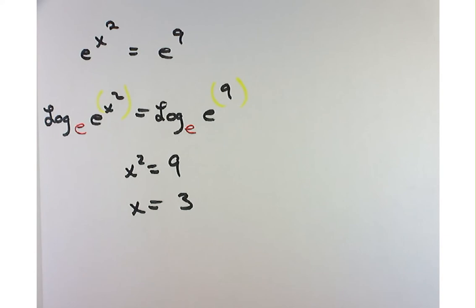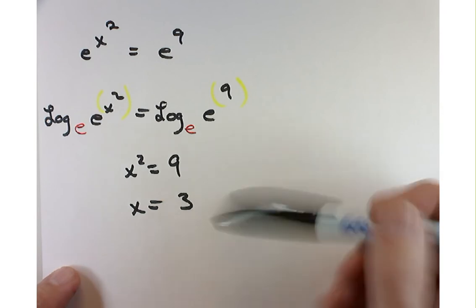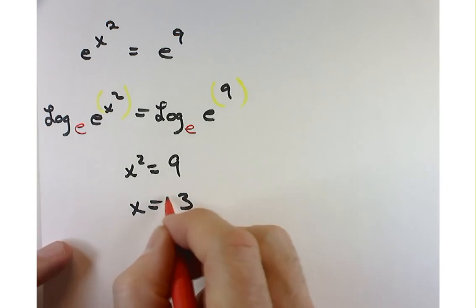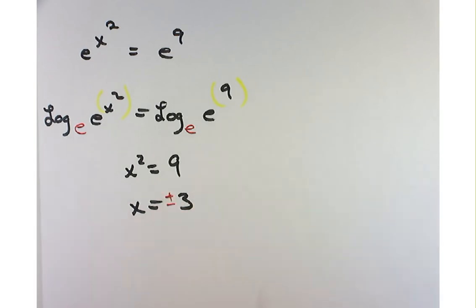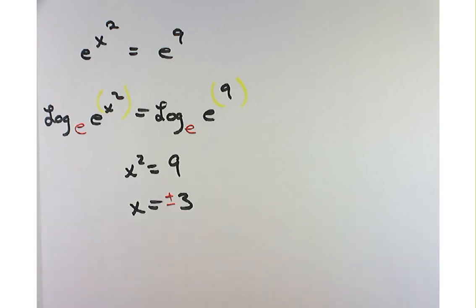If you wrote down x equals 3, that's not exactly the right answer — you need plus or minus 3. Forgetting the plus or minus means you're throwing out half the solution. So that leaves me a challenge as to how much partial credit to give you. Give me the plus or minus, and we'll both be really happy.